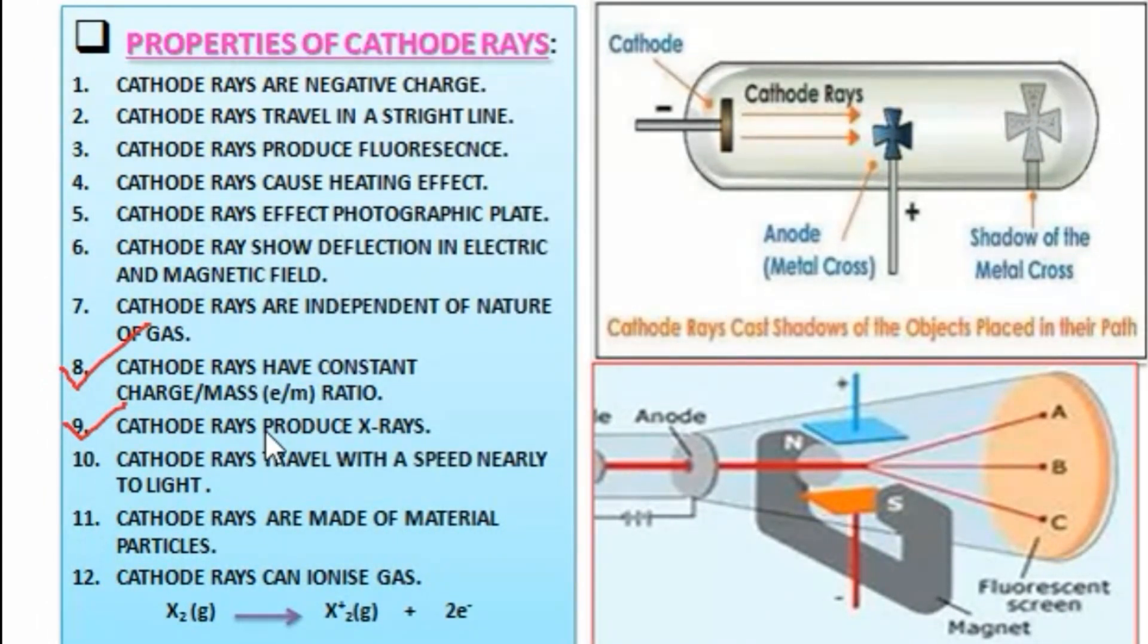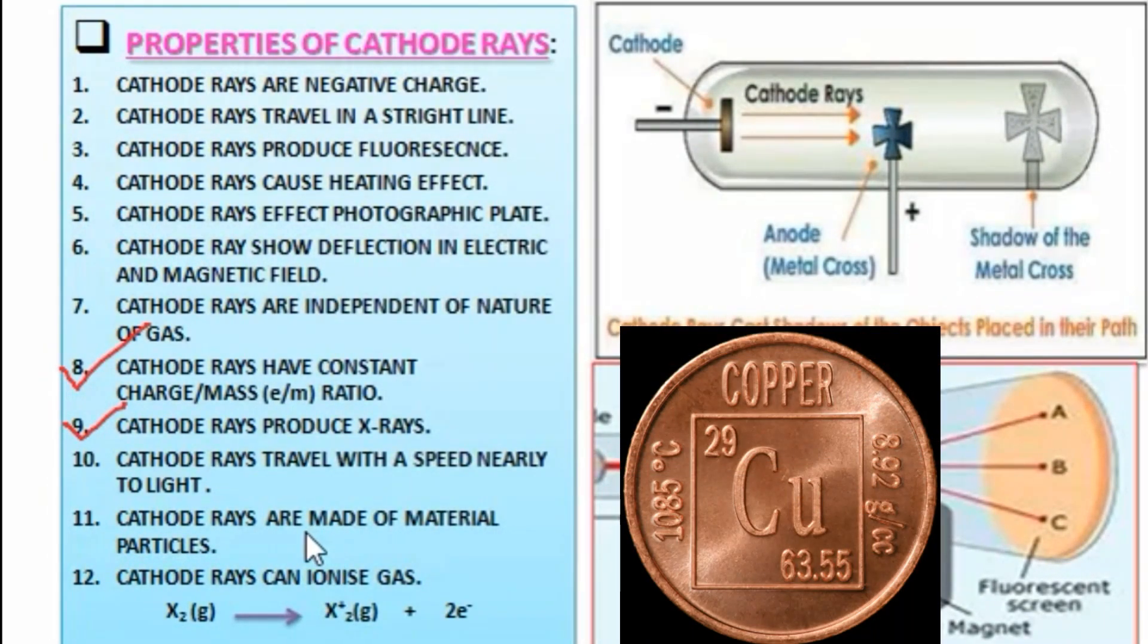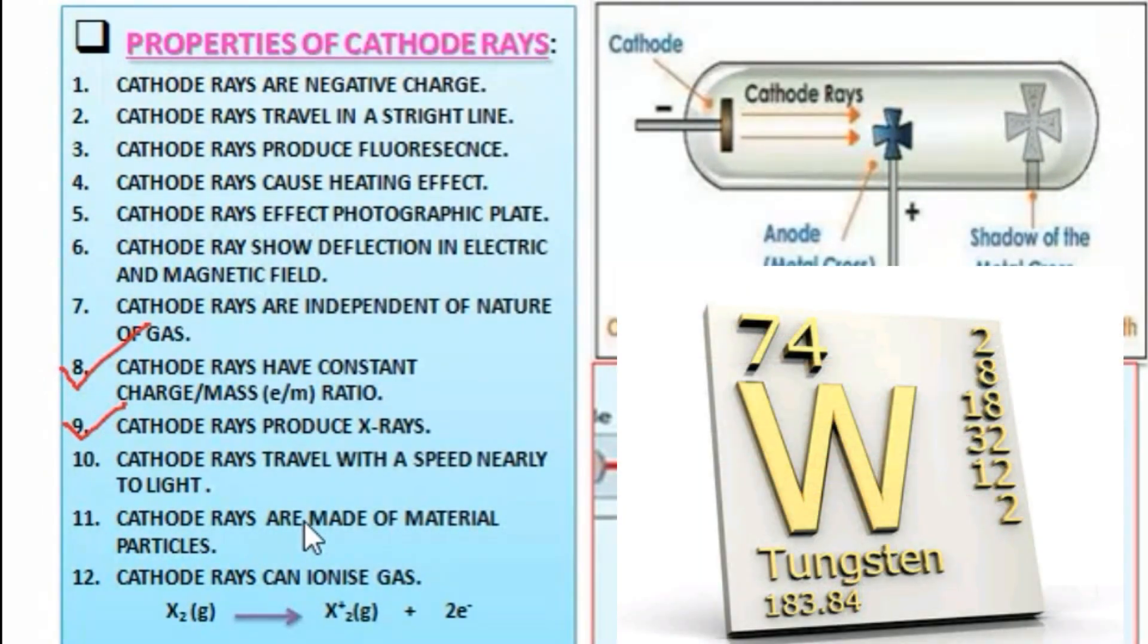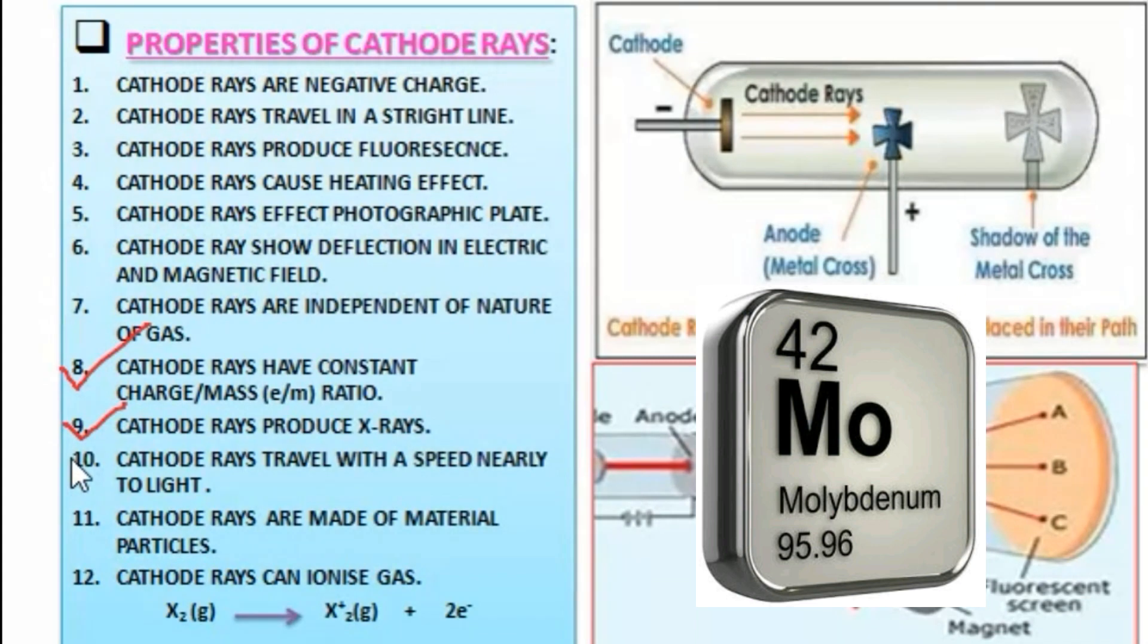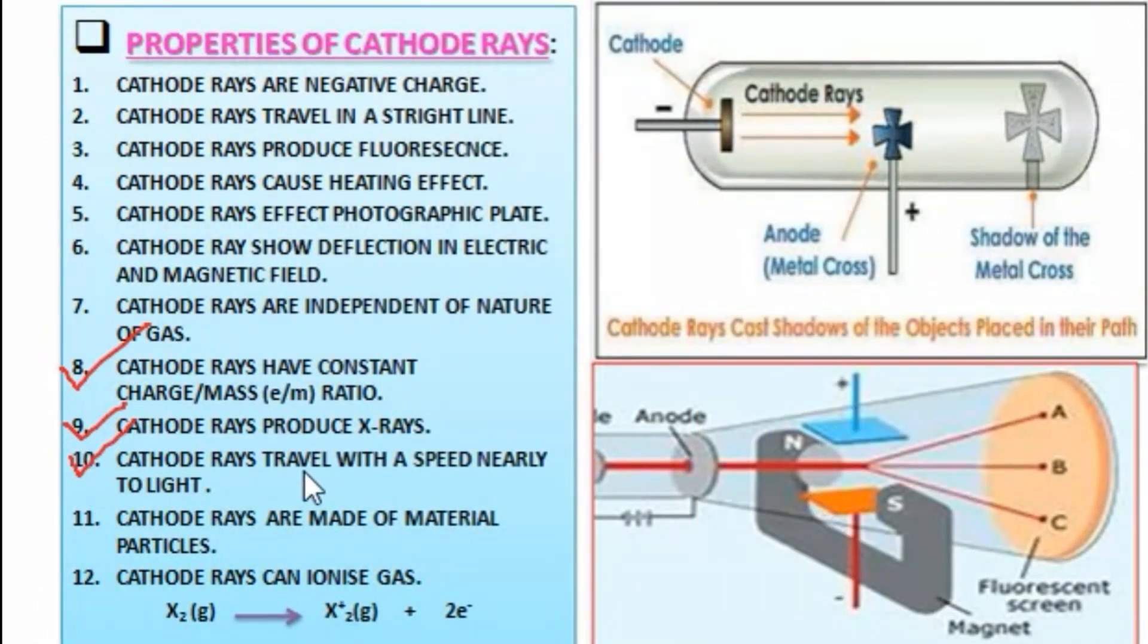Another property: cathode rays produce X-rays. This means when fast-moving cathode rays strike solid metals like copper, tungsten, or molybdenum, they produce X-rays.